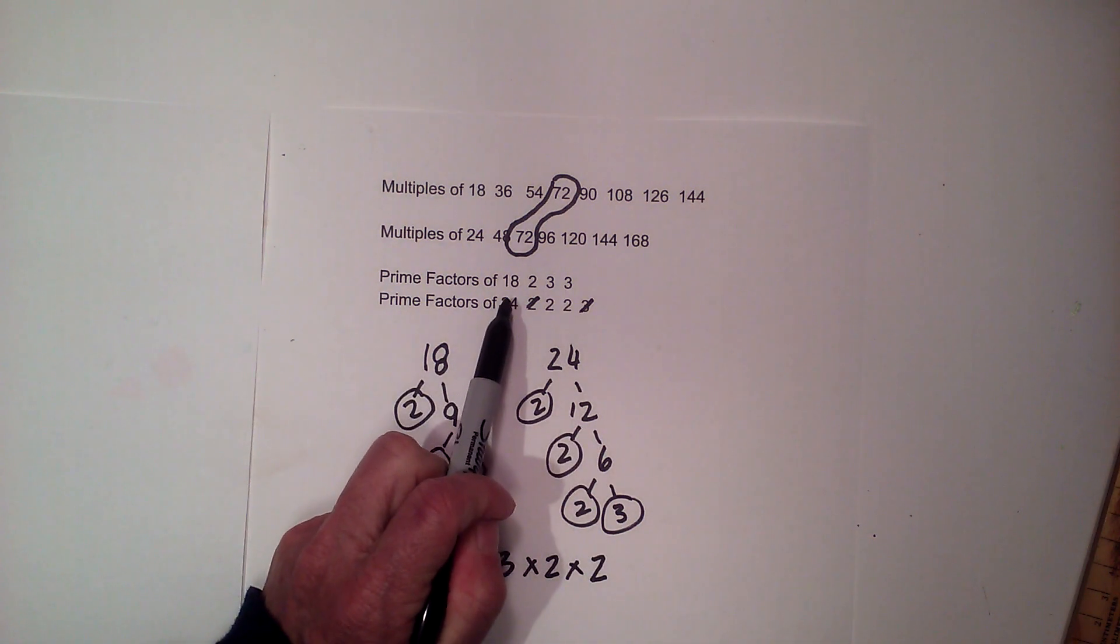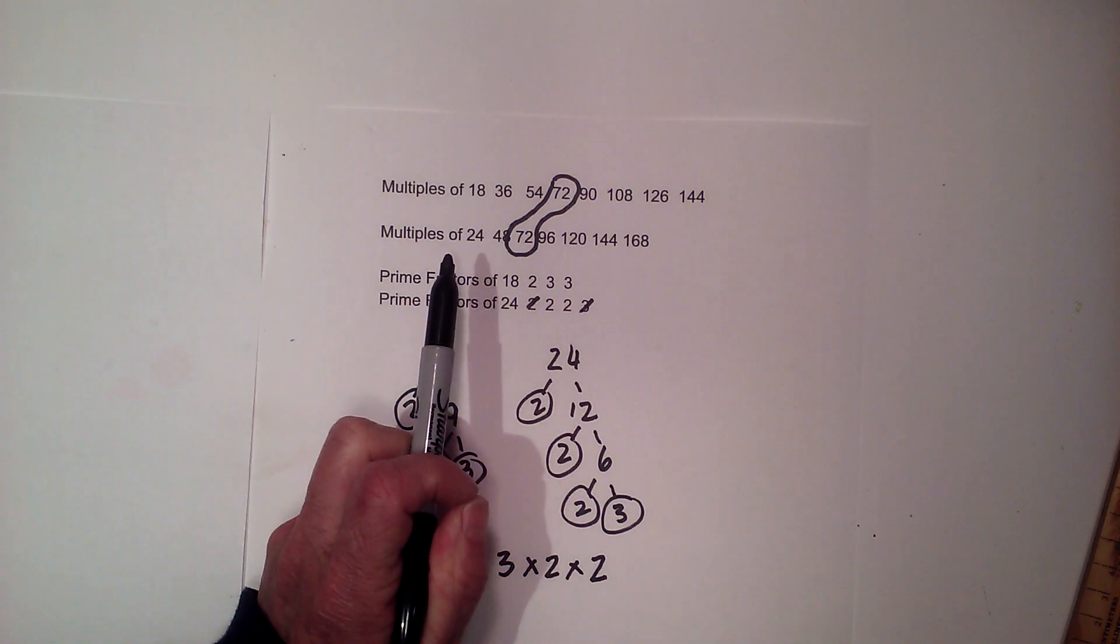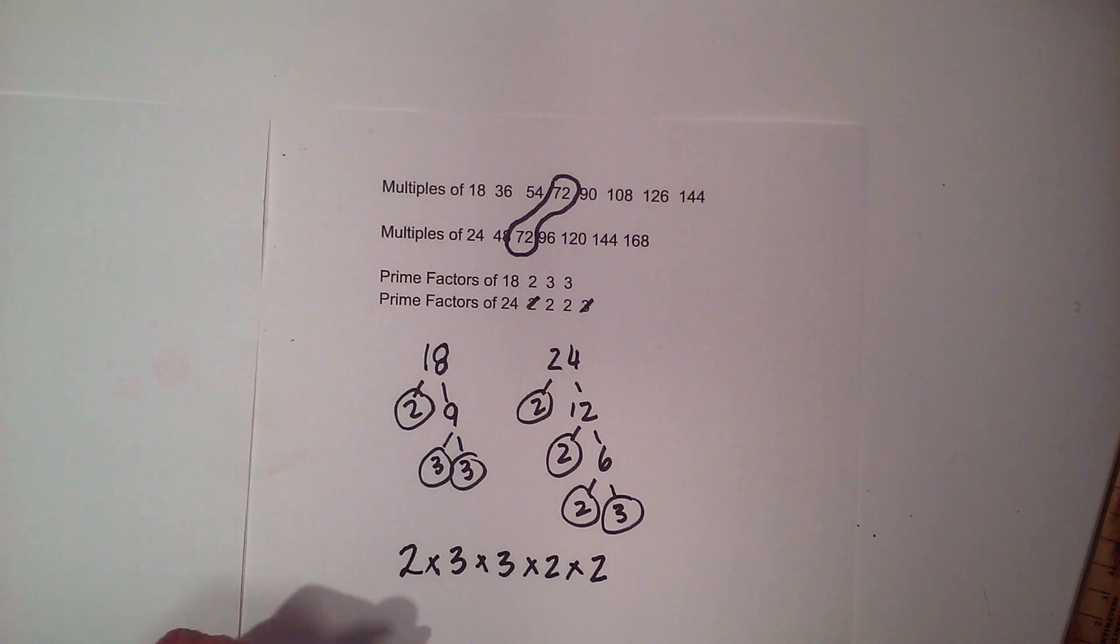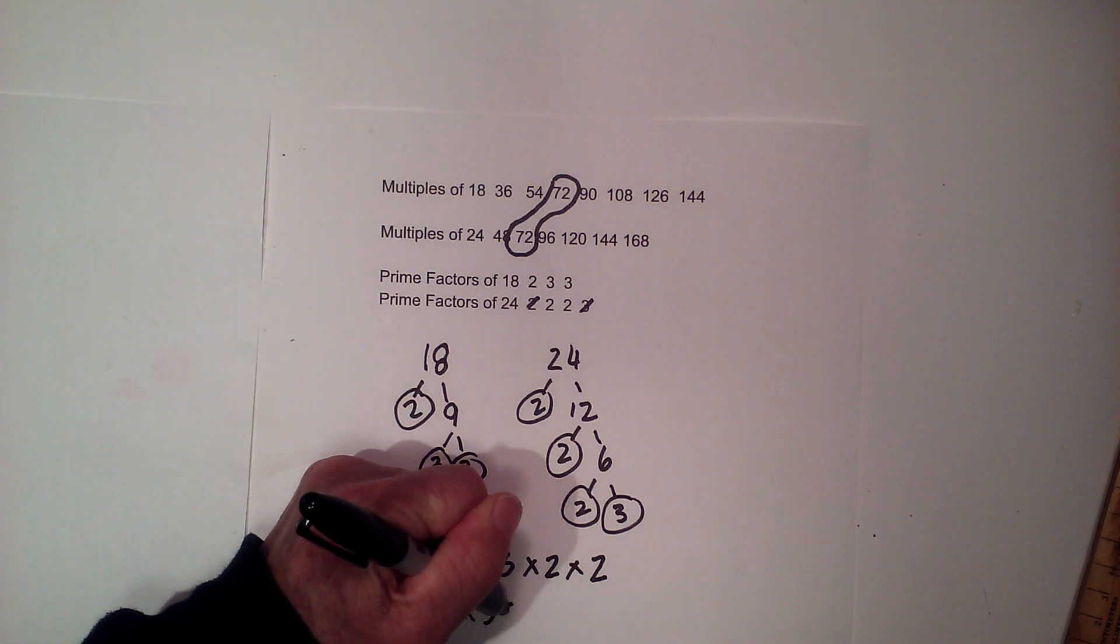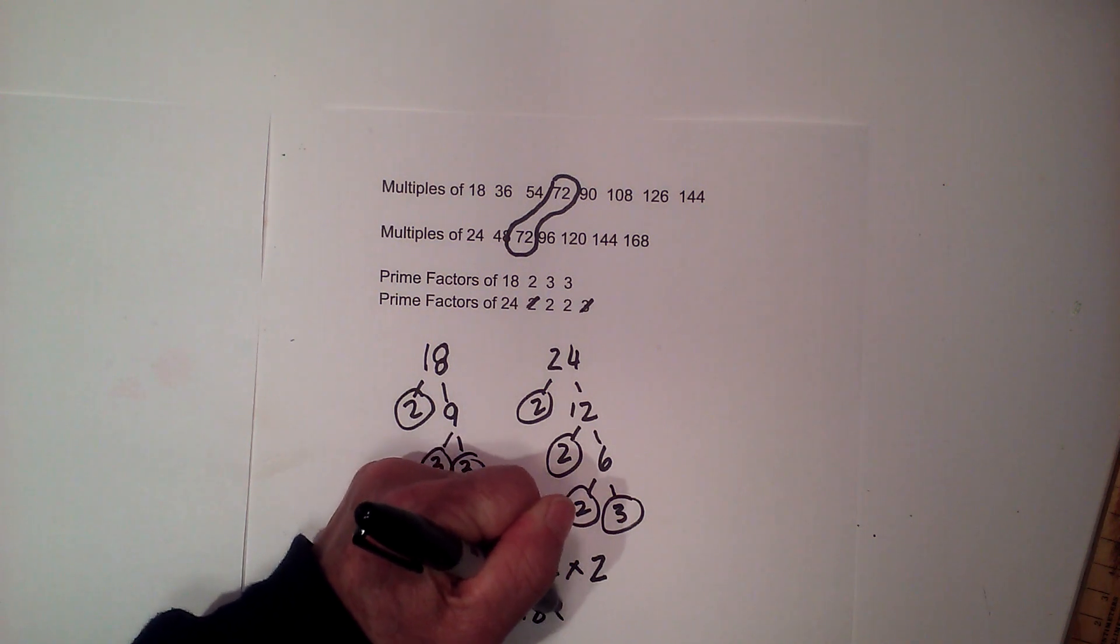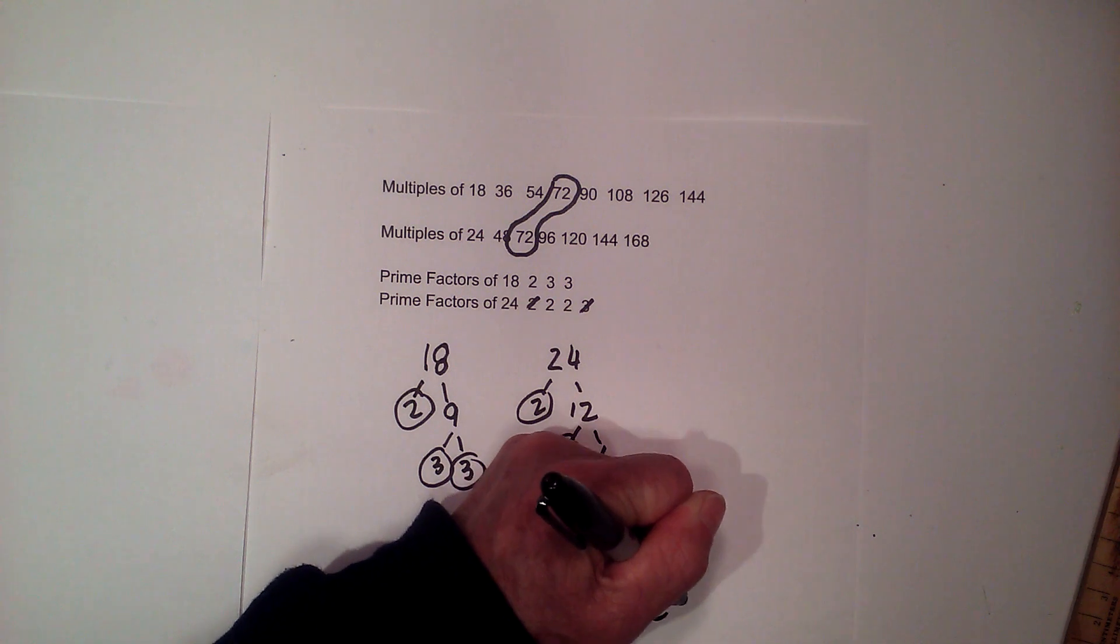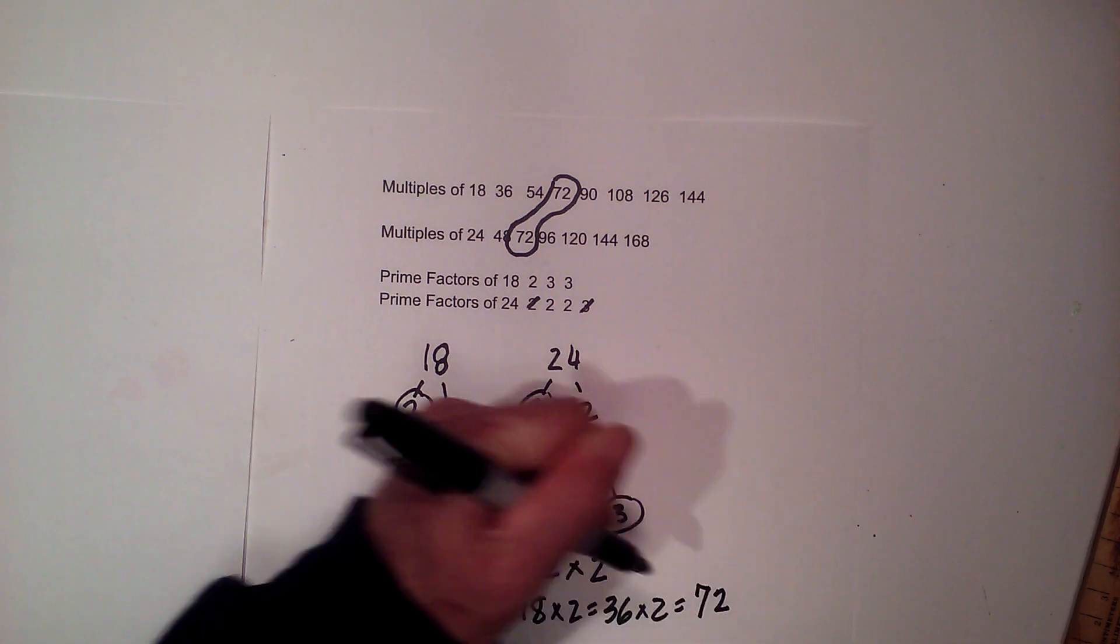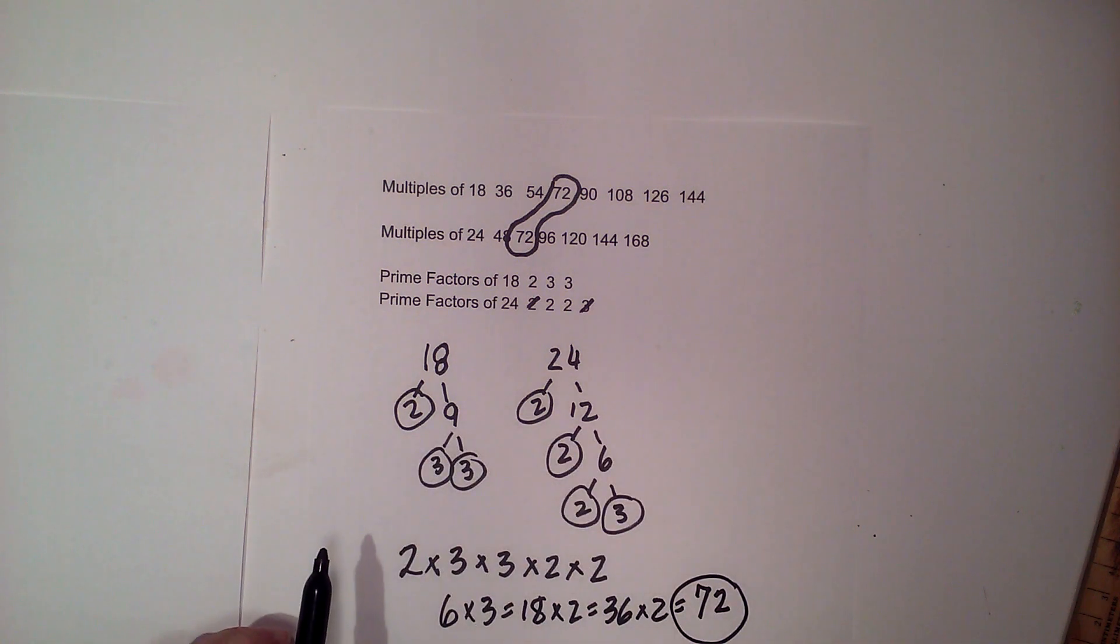Now, that is one negative of this. You have to remember to cross off the numbers. If you don't, you're going to get the wrong LCM. And then I just multiply these together: two times three is six, times three equals eighteen, times two equals thirty-six, times two equals seventy-two. So both of them, both techniques, same answer, different way to get there.